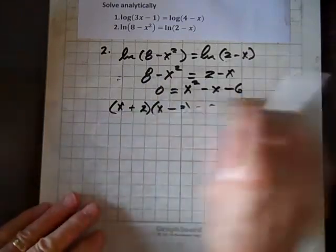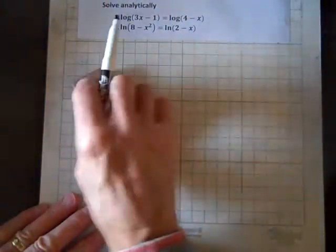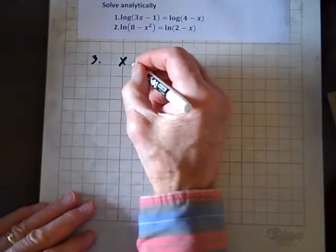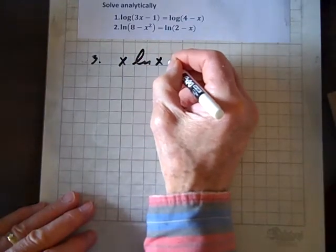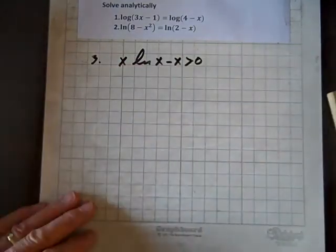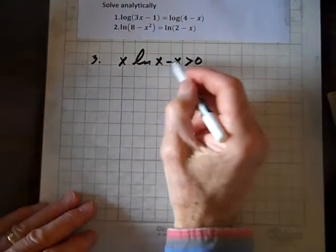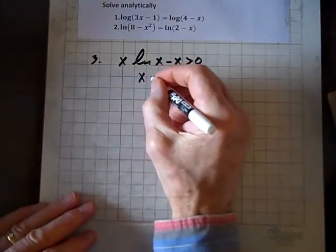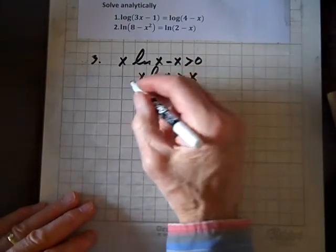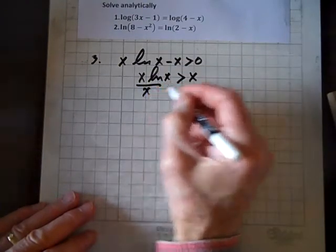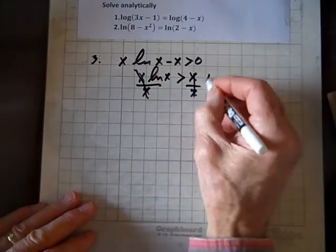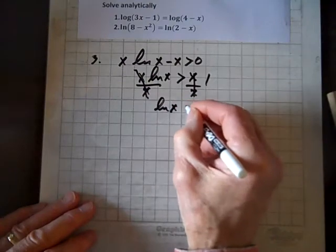Now, there's one more I want to do, and it's an inequality, and we'll call it number 3. And it goes like this. x times the natural log of x minus x is greater than 0. Well, let's at least add x to both sides, so we get x ln of x is greater than x. Now we can divide both sides by x, and these divide out, and these become 1, so we get ln of x equals 1.